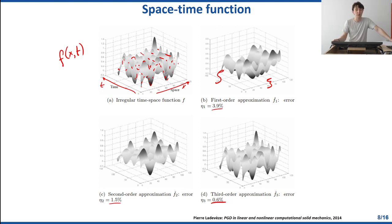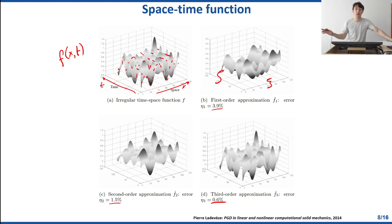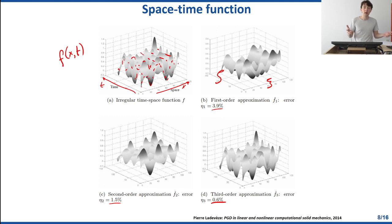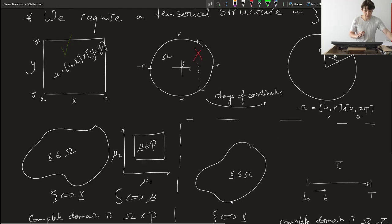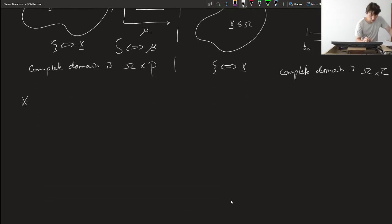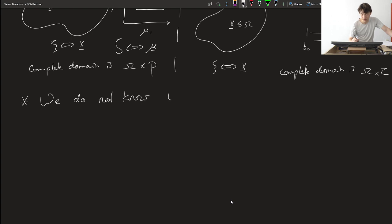But clearly POD has the flaw that we need to know the function in advance — and that is precisely the second catch. We do not want to do that with PGD. We want to do everything during an online stage without wasting computational resources exploring what our functions might potentially be to build a snapshot matrix. The second catch: we do not know the solution that we're actually trying to compute beforehand.